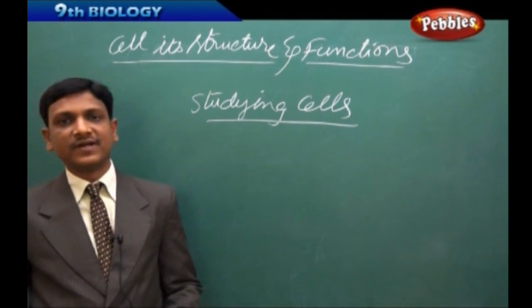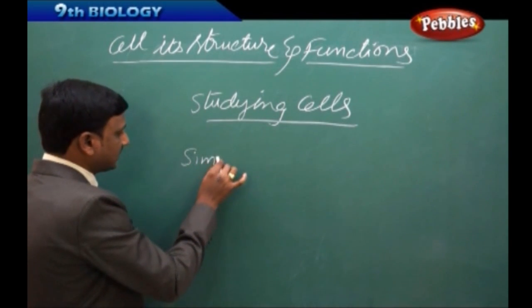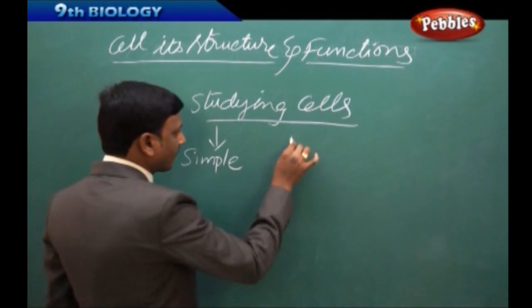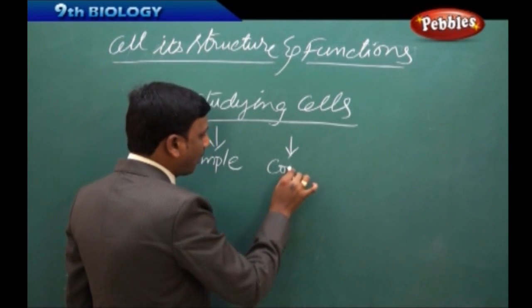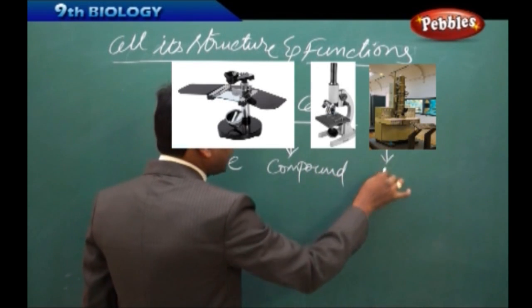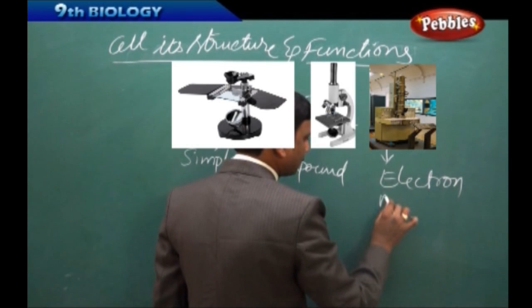So microscopes are of different types. So we have three different types of microscopes. So this is basically simple microscope and compound microscope and electron microscope.